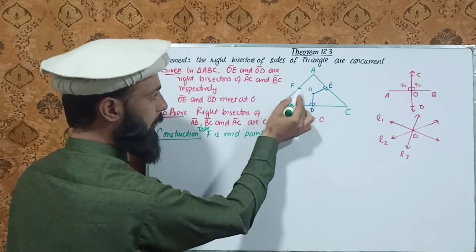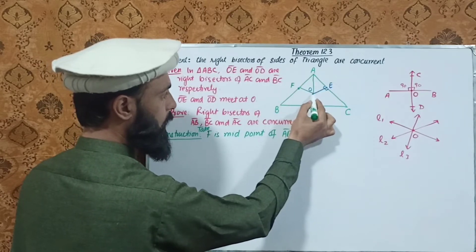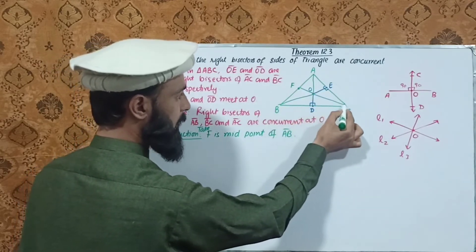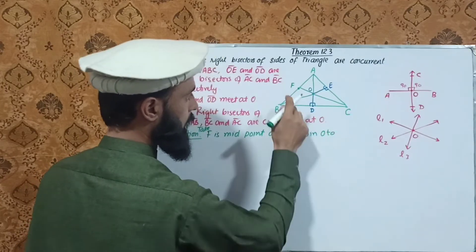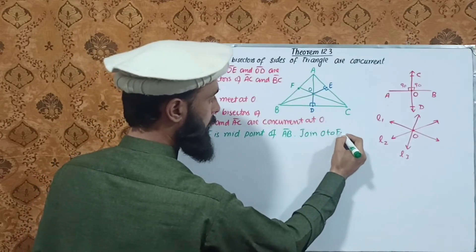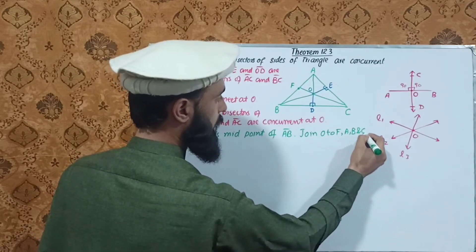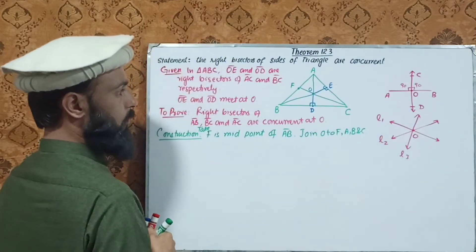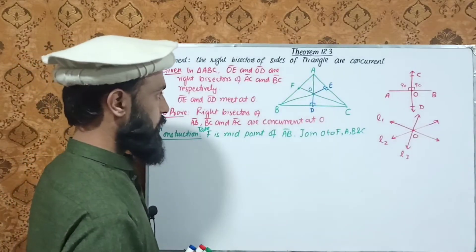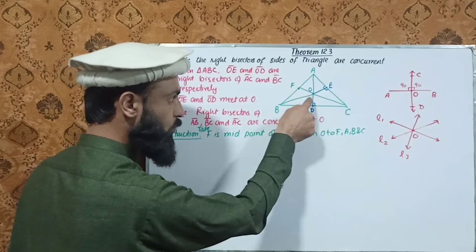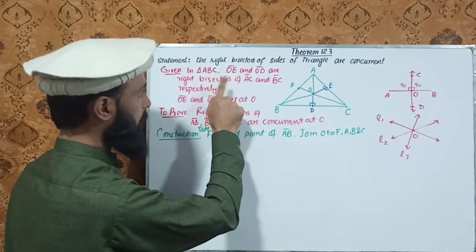We need to show that O lies on the right bisector of AB as well. Join O to A, B, and C. Then, since OD is the right bisector of BC and OF is the right bisector of AB, we have the given conditions — OD is the right bisector of BC, OE is the right bisector of AC, and OF is the right bisector of AB.